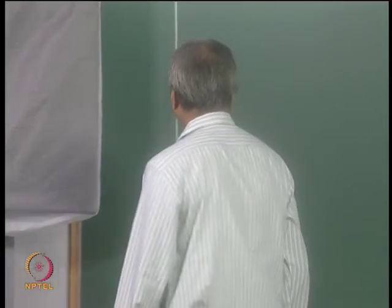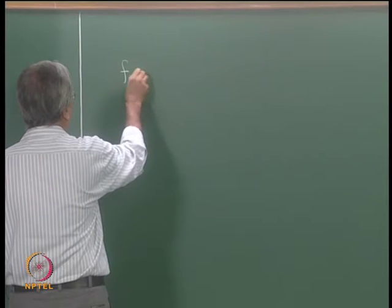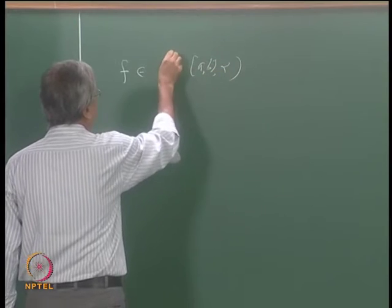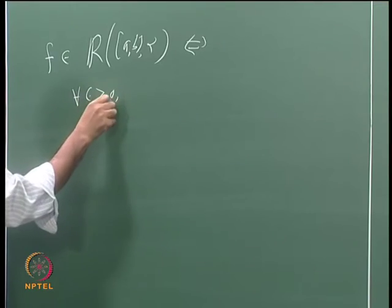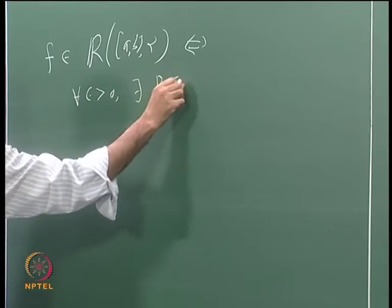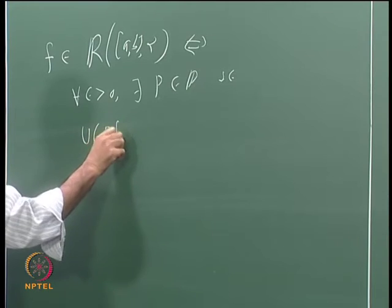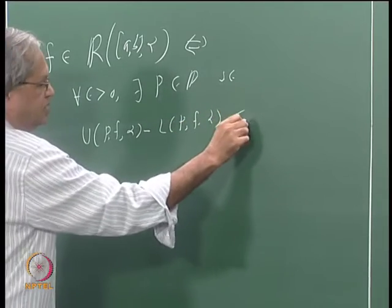We have seen that one of the relatively easy ways of showing that a function is integrable, either Riemann integrable or Riemann-Stieltjes integrable, is the criterion we discussed last time: f is in R(α) on [a,b] if and only if for every ε > 0 there exists a partition P such that U(P,f,α) − L(P,f,α) < ε.